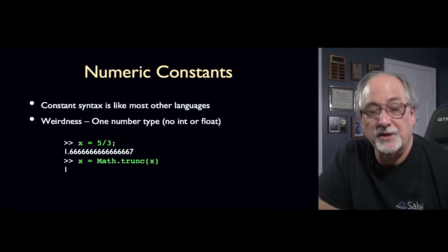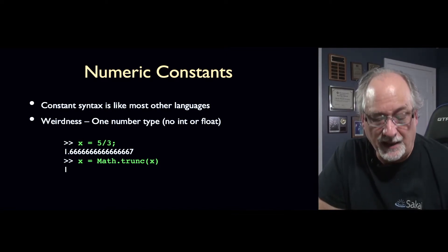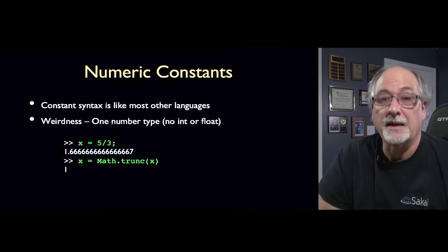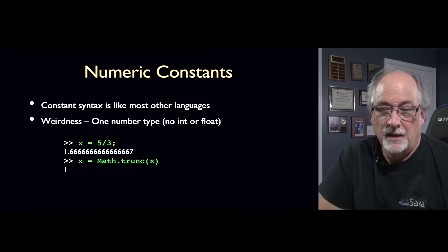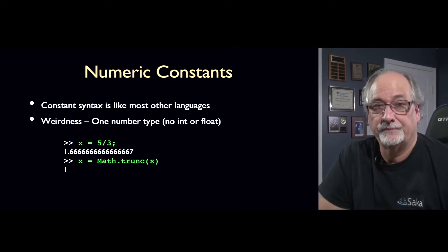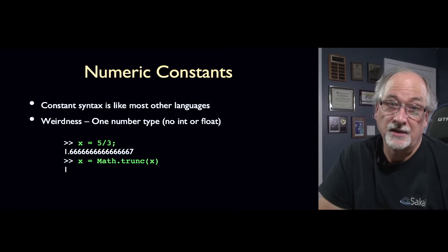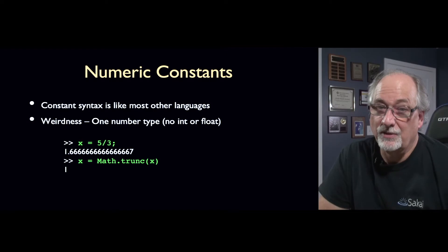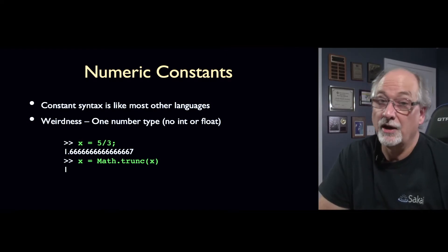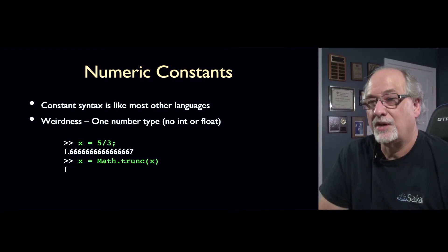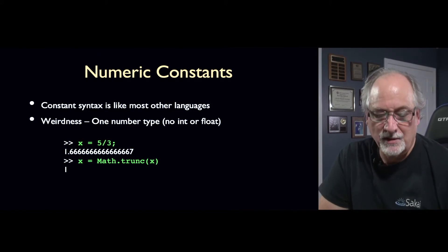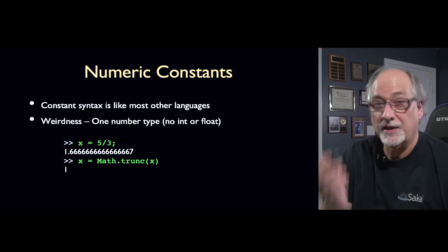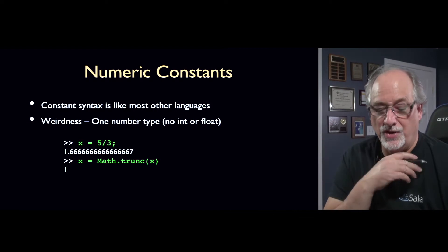Numeric constants are pretty much like every other language. But, there is only one number type. In most languages, there's like an integer and a floating point. Sometimes there's double and float. There's different kinds of long integers. In JavaScript, I think, in a way, they were smart. And they basically made one type, one numeric type called number.